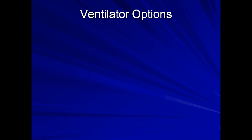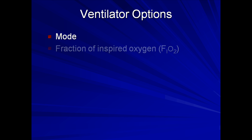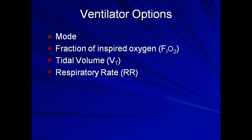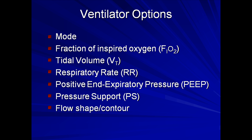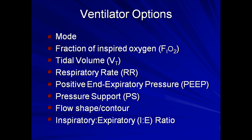Let's go through the list of commonly available vent options. First is the vent mode. Next, the fraction of inspired oxygen, usually abbreviated FiO2, tidal volume, respiratory rate, positive end expiratory pressure — usually referred to as PEEP — pressure support, flow shape and contour, and finally the ratio of inspiratory time to expiratory time, usually abbreviated as I to E ratio. I'll now discuss these one at a time, with the exception of vent mode, which was the subject of the entire seventh lecture.